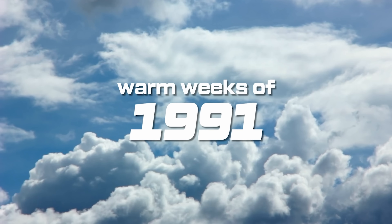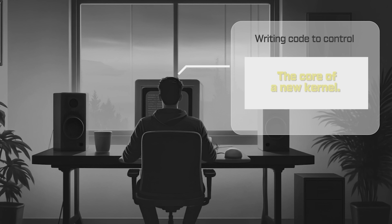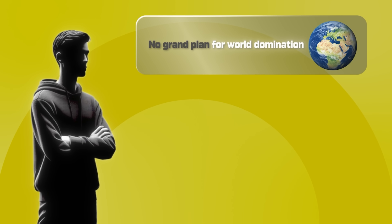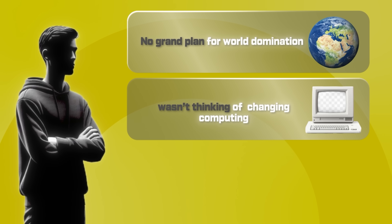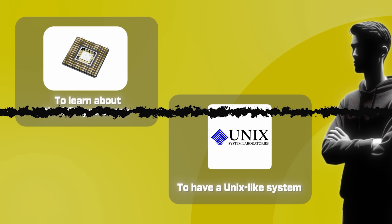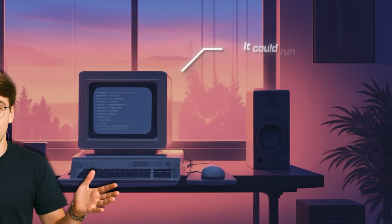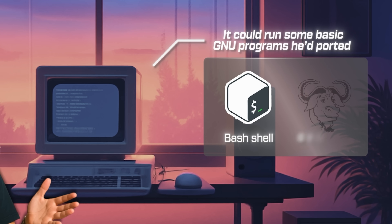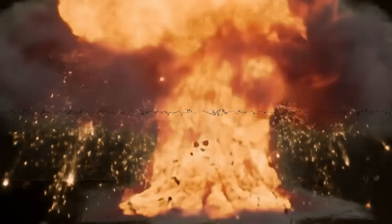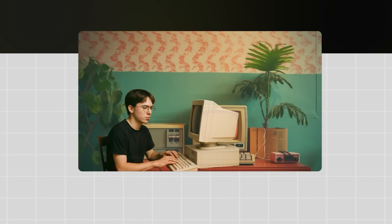Through the warm weeks of 1991, Linus hacked away in isolation, writing code to control the CPU, memory, and disk — the core of a new kernel. He had no grand plan for world domination. He wasn't thinking of changing computing or fulfilling Stallman's dream. He later admitted he started the project to learn about the 386 processor and to have a Unix-like system he could run at home. It was, at the outset, a personal challenge, a geeky adventure. By late August, Linus's kernel was starting to work. It could run some basic GNU programs — he'd ported the Bash shell and GCC compiler — and it didn't crash immediately. It was primitive, but functional. At this point, many a hacker might keep tinkering in private.